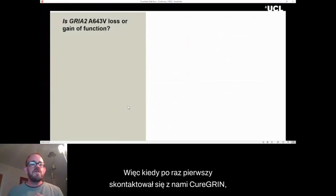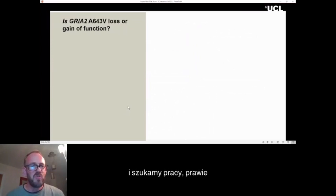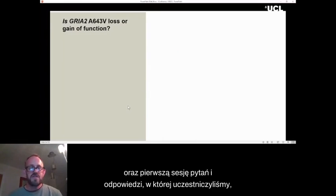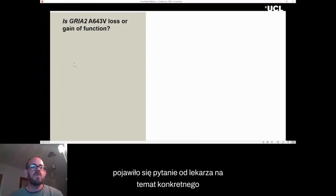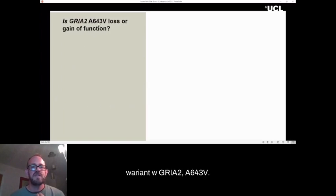So when we first were contacted by CureGrin, in the first question and answer session we attended, there was a question from a clinician about a particular variant in GRIA2, A643V. And they were wondering whether it was loss of function or gain of function. And this was going to dictate the approach they took for the patient. And so we decided to have a look at it.